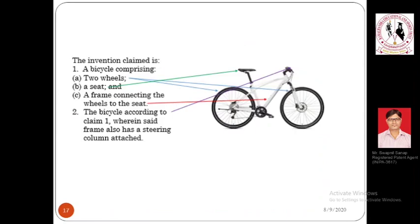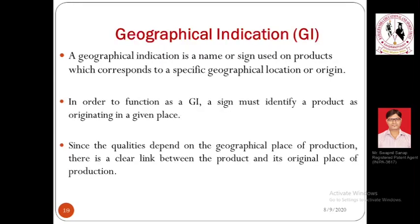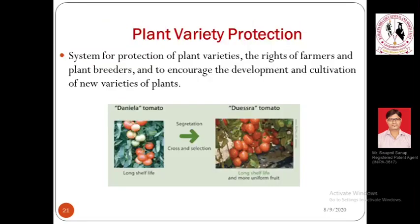Patents are all about technology and invention — solving a particular problem and providing a solution. Trade secrets are secrets associated with a trade; if disclosed to a competitor they may hamper business revenue. Geographical indication is an indication associated with geography — examples include Nagpur oranges, Kolhapuri chappals, Dharwad pedha, Jaipur shawl, and Kanjivaram silk. Plant variety protection is a breeder's right protecting superior plant varieties that produce a result further superior to the conventional one.